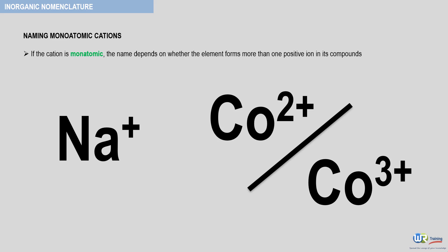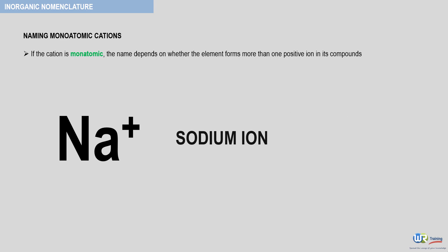Cations of elements that form only one type of ion in all their compounds need not be further identified in the name. Therefore, Na+ may simply be called the sodium ion.